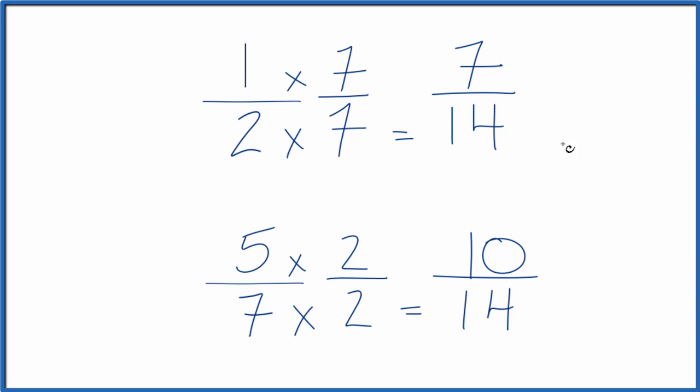And now we have two fractions. Their denominators are the same, so we can just compare the numerators. When we do that, since 10 is larger than 7, 10 fourteenths is larger than 7 fourteenths.